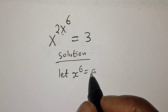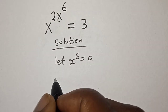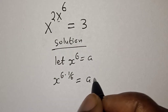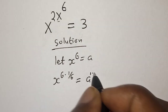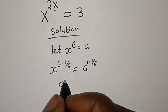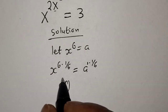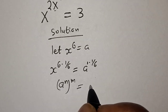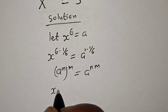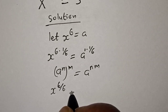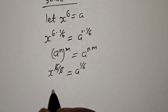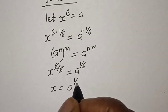Now let's multiply the power of both sides by 1 over 6. That is, s raised to power 6 multiplied by 1 over 6 is equal to a raised to power 1 multiplied by 1 over 6. Remember this rule: a raised to power n to the power of m is equal to a raised to power n times m. Then we have s raised to power 6 over 6 is equal to a raised to power 1 over 6. This 6 over 6 cancels, therefore s is equal to a raised to power 1 over 6.